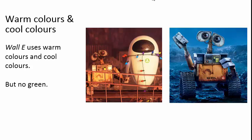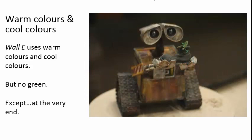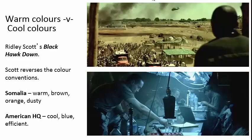WALL-E is a film entirely without green. Ralph Eggleston designed it — I sent him an email saying 'Ralph, you did a film with no green,' and he said 'I'm so glad you noticed.' That's what production designers do, that's what they figure out. In Ridley Scott's Black Hawk Down, Scott reverses the color convention. Usually good guys are warm colors and bad guys are cool colors, but here he flips it — Somalia is warm brown, orange, and dusty, while the American HQ is cool blue efficiency.